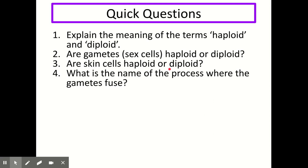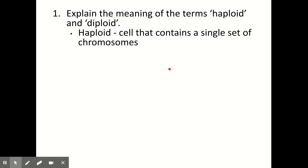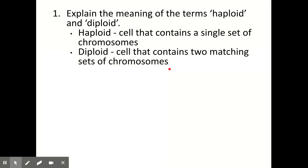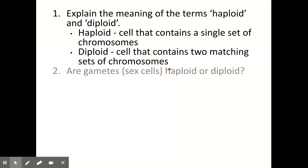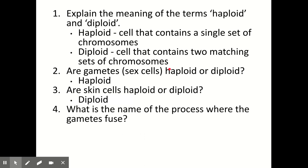Pause the video here and try these questions, either by saying the answer out loud or writing them down. Haploid is a cell that contains a single set of chromosomes, whereas diploid is a cell that contains two matching sets of chromosomes. Gametes or sex cells are haploid. Skin cells are normal body cells, so they follow the usual rule and are diploid. The name of the process where gametes fuse is fertilization.